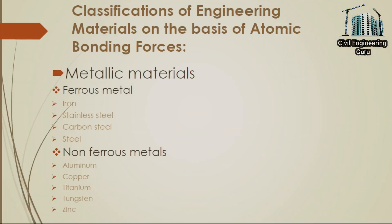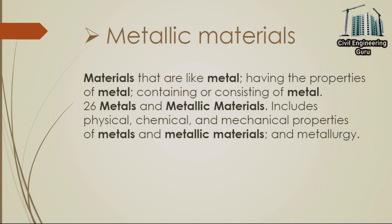Now let's move toward the classifications of engineering materials on the basis of atomic bonding forces, and we will define step by step all these classifications. First, metallic materials — materials that are like metal, having the properties of metal, containing or consisting of metal. This includes physical, chemical, and mechanical properties of metals and metallic materials, and metallurgy.